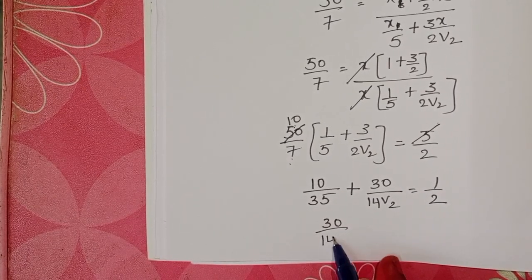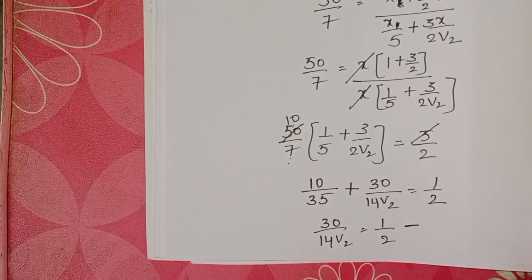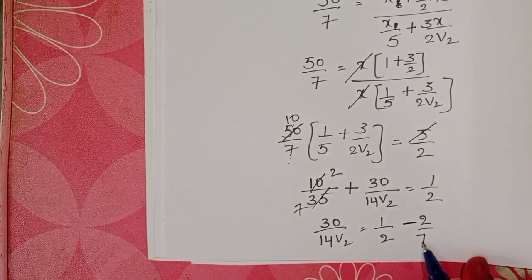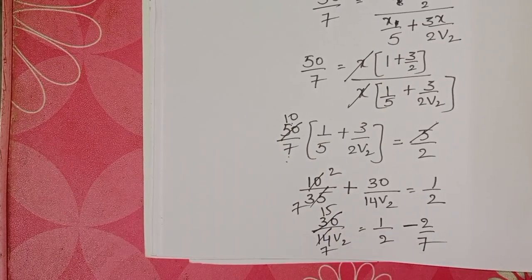30 by 14v2 equals 1 by 2 minus, 5 by 7 minus 2 by 7. Cancel with 2, 15 by 7v2.